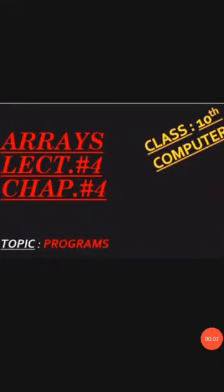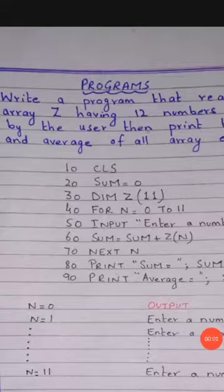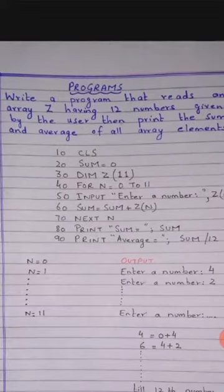Assalamualaikum 10th class. Today is our lecture number 4 of chapter number 4 and today we will discuss some programs that are related to arrays, which are present in your exercise of chapter number 4. Program number 1 is: write a program that reads an array Z having 12 numbers given by the user, then print the sum and average of all array elements.